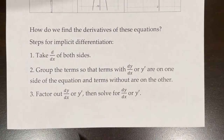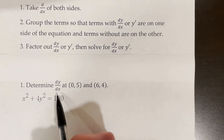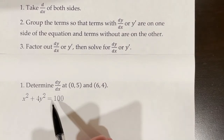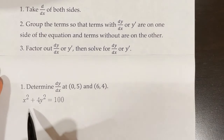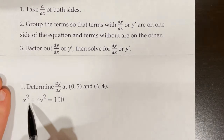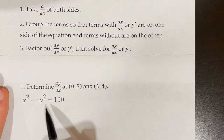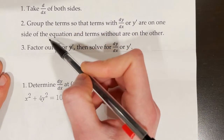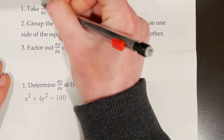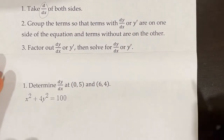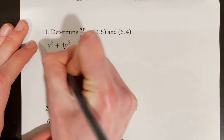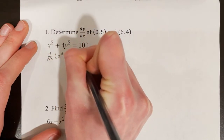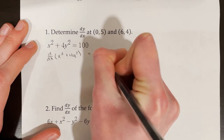These are the steps for implicit differentiation that I will work through with some examples. Example 1 asks us to determine dy over dx at the points (0, 5) and (6, 4), given x squared plus 4y squared is equal to 100. We're going to need to use implicit differentiation here because y is defined implicitly as a function of x. So the first step is to take d/dx and apply it to both sides — this is called the derivative operator. When we write that on both sides, it means take the derivative with respect to x of each term. So I'm going to say d/dx of x squared plus 4y squared is equal to d/dx of 100.